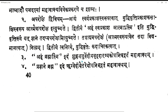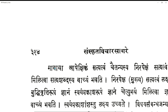Aham Brahmaasmi — idam Shukla Yajurvediya Brhadaranyaka Upanishad Gatam Mahavakya. Aham Brahmaasmi occurs in Brhadaranyaka. Prajnanam Brahma — idam Rugvediya Aitareya Upanishad Gatam Mahavakya. So Aitareya Upanishad in Rugveda has this Mantra — Prajnanam Brahma.